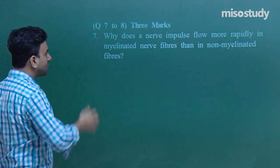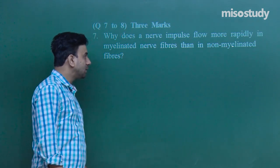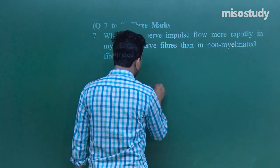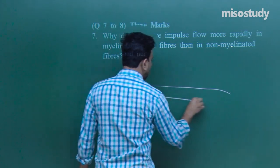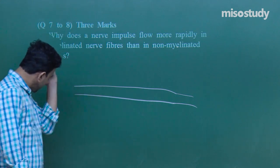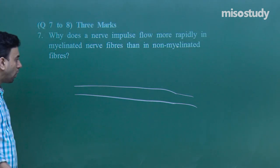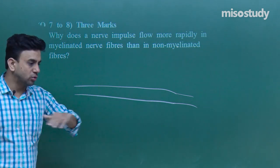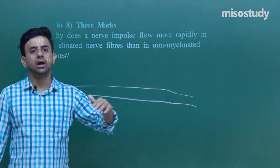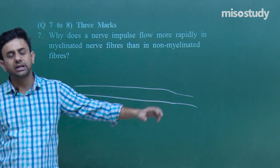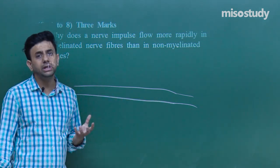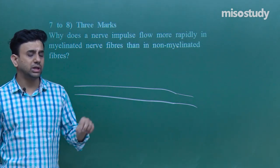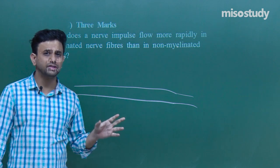Why does a nerve impulse flow more rapidly in a myelinated nerve fiber than in a non-myelinated nerve fiber? In a non-myelinated nerve fiber, the action potential is generated point by point along the entire length of the fiber — from the first point to the second, third, fourth, and so on.